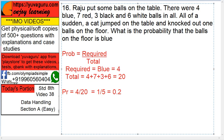Rajah put some balls on the table. There were 4 blue, 7 red, 3 black and 6 white balls. All of a sudden, a cat jumped on the table and knocked out one of the balls. What is the probability that the ball on the floor is blue?